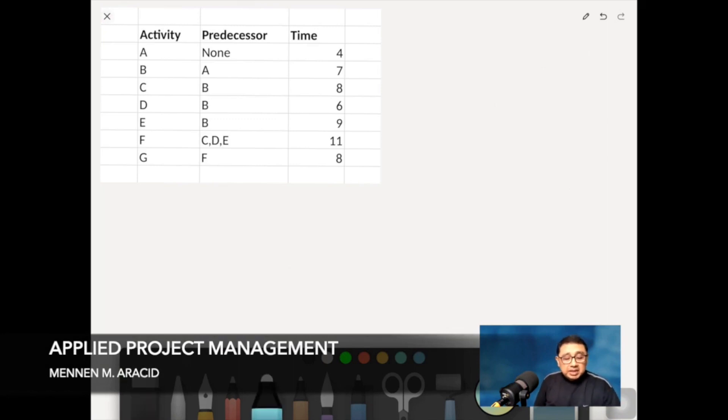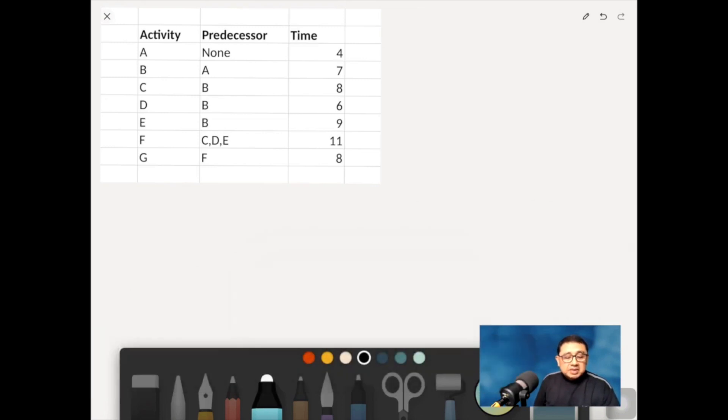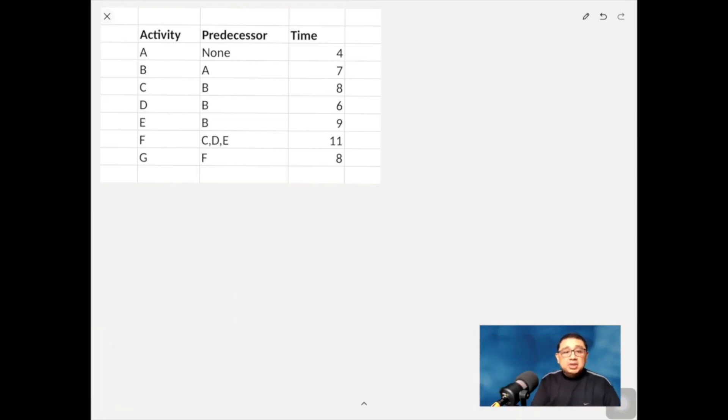So as we already earlier in our previous subjects have taken, when we tried to draw, for example, activity A, activity A has no predecessor. So there is nothing that you will see immediately that precedes it.